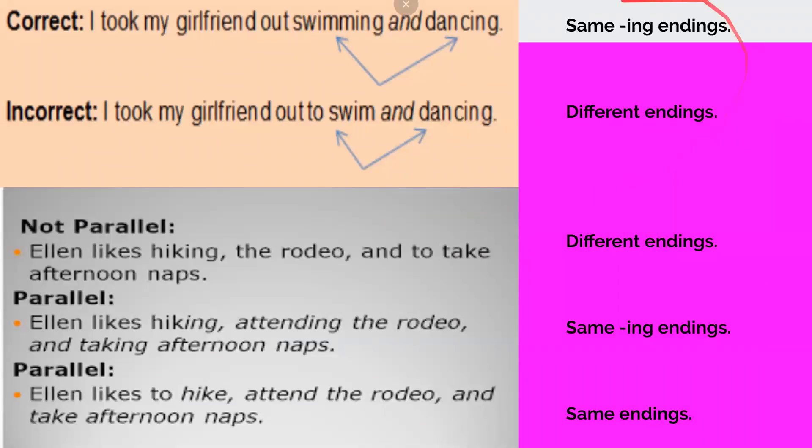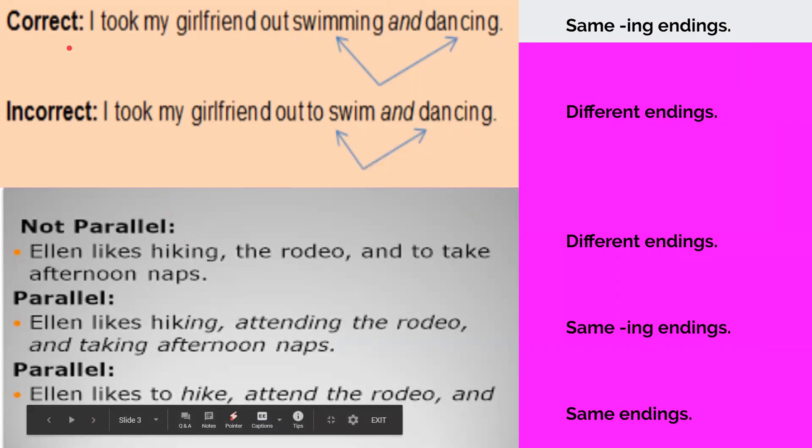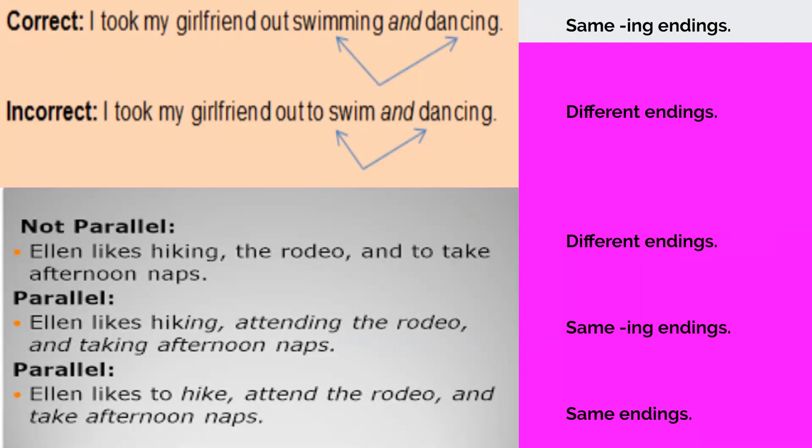Here are a bunch of examples. So we have the correct version which is I took my girlfriend out swimming and dancing. Notice that we have the same -ing endings for both of these words. And for the incorrect version we have I took my girlfriend out to swim and dancing. These have different endings. This has -ing and this one is just the regular word.